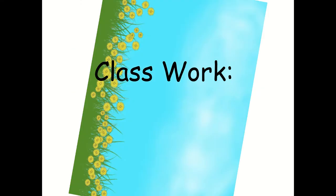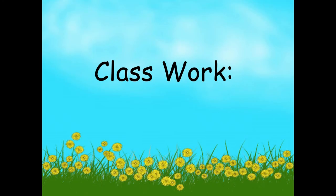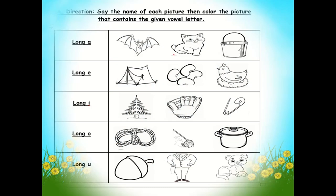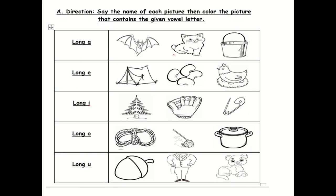Now let's have your revision worksheet. Bring out your revision worksheets, your pencil, and your colored pencil. For the first part, say the name of each picture, then color the picture that contains the given vowel letter. For example, in the first line we have the long A. So look for the object that has the long A sound. First we have 'bat', 'cat', and 'pail'.